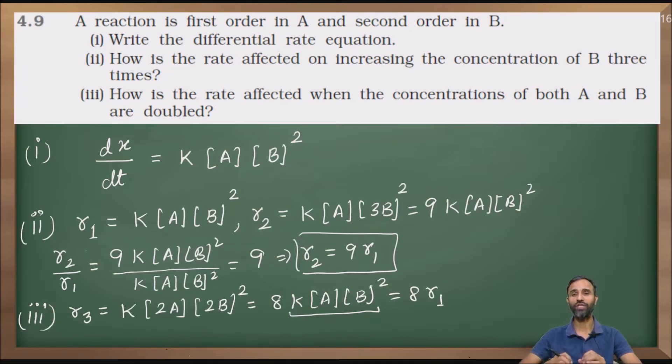Write the differential rate equation. First order means A raised to power 1 and second order means B raised to power 2. In rate law, we will write concentration of A raised to power 1. That is why the differential rate equation is dx by dt, that is change in concentration with respect to time.